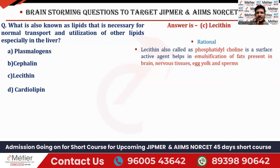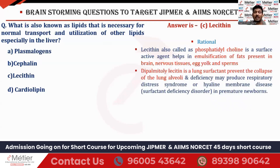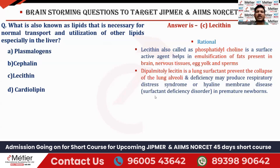There are two types of lecithin. The first is phosphatidylcholine, which emulsifies fat in the brain and nervous tissues. The second type is dipalmitoyl lecithin, which acts as a lung surfactant and prevents collapse of the alveoli. If dipalmitoyl lecithin is deficient, the fetus or newborn will develop hyaline membrane disease, also called surfactant deficiency disorder. This condition is very commonly seen in premature newborns. Both types of lecithin are very important.